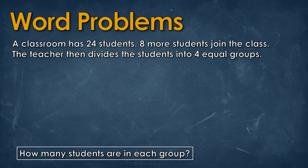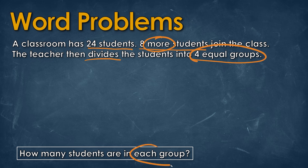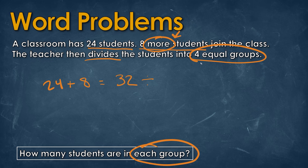Let's take a look at this question. A classroom has 24 students. Eight more students join the class — that word 'more.' The teacher then divides the students into 4 equal groups. How many students are in each group? We start out with 24 students, and eight more students join the class — that word 'more' always means we're adding. So 24 plus 8 is equal to 32. Now it says the teacher 'divides,' so we know we're going to divide by four equal groups. 32 divided by 4 equals 8. There are 8 students in each group.